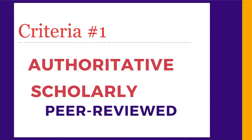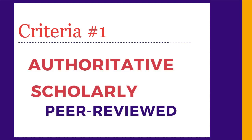There are two basic criteria to use when evaluating your sources. The first is that the sources should be authoritative, which often means scholarly or peer-reviewed. Nearly all your assignments require you to use authoritative or scholarly sources, whether they say so or not. In Arts and Science majors, you're expected to use scholarly or peer-reviewed sources.